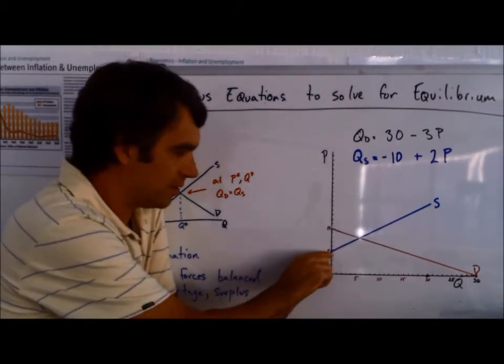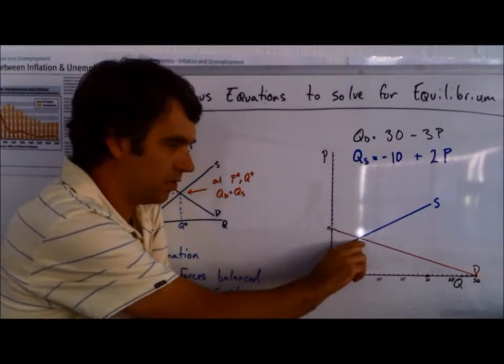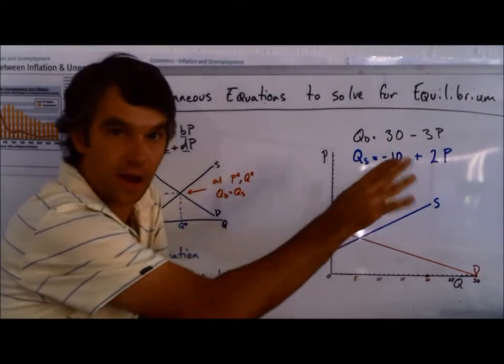So from this point 5, we continue to go up 1 over 2. Run of 2, rise of 1, run of 2, rise of 1, on and on and on.